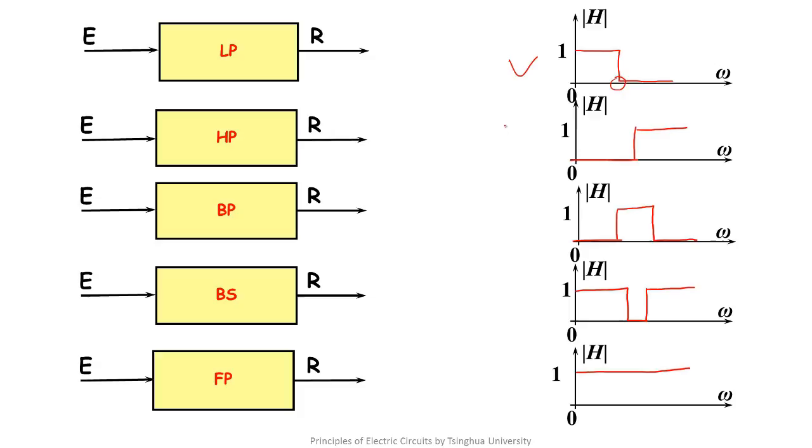Here we ask you a question. If we have the low-pass filter and the high-pass filter, then how to get the band-pass filter and band-stop filter by combining them?